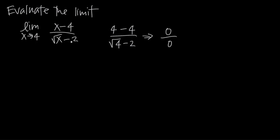The conjugate method is especially useful when you have a square root involved in your numerator or denominator — particularly if you have something inside a square root with the sum or difference of another term. Here we have the difference of a square root and a constant term, so this should be a hint to try the conjugate method.